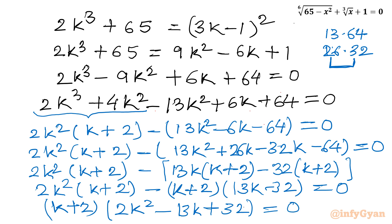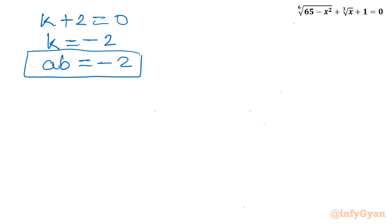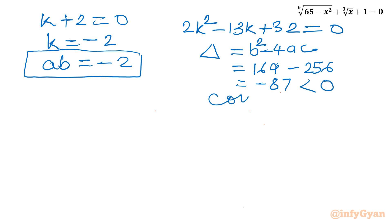Factorization is done. We solve each factor. From K plus 2 equals 0, we get K equals negative 2, so ab equals negative 2. For the second factor 2K² minus 13K plus 32 equals 0, the discriminant D equals 13 squared minus 4 times 2 times 32 equals 169 minus 256 equals negative 87. Since D is negative, this gives only complex solutions and we can easily reject this equation.